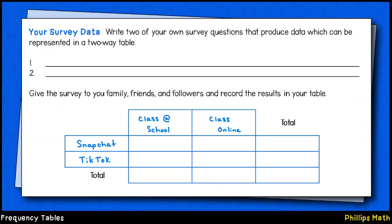For today's assignment, you're going to conduct a survey which will result in two-way table data. You're going to come up with two questions that could be used to survey your family, friends, and or your followers. Here's a possible example for you. You could survey your friends whether they prefer having class at school or class online, and categorize your results across two platforms, such as Snapchat or TikTok.